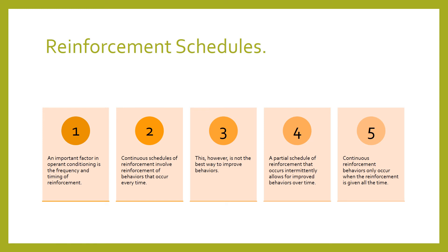Reinforcement schedules are an important factor in operant conditioning — specifically the frequency and timing of reinforcement. Continuous schedules of reinforcement involve reinforcing behaviors every time they occur, such as every time the rat pushes the lever it gets food. However, continuous reinforcement is not the best way to improve behaviors. The best approach is a partial schedule of reinforcement that occurs intermittently, which allows for improved behaviors over time.